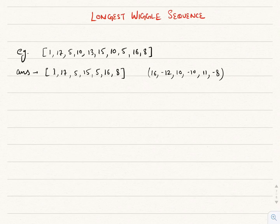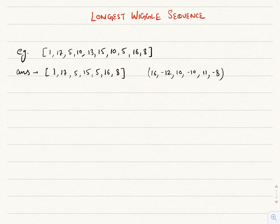Hi everyone, let's discuss one more problem today and the approach to solve it. The given problem is: given a sequence of numbers, we have to find the longest wiggle sequence. A sequence is called a wiggle sequence if the differences between successive numbers strictly alternate between positive and negative numbers, and the first difference can be either negative or positive. It can have more than one longest wiggle sequence, but we just have to find the length of the longest one.